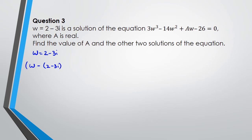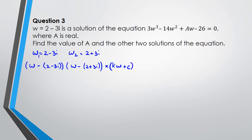Since this is a cubic there are three brackets. We also know the conjugate w₂ = 2 + 3i is also a solution, so the second bracket is (w - (2 + 3i)). For the third bracket we don't know the coefficient of w, so we put that as k, and we don't know the constant, which we'll call c.